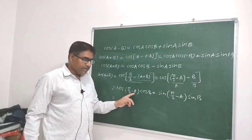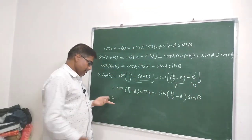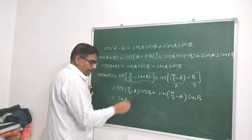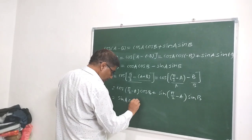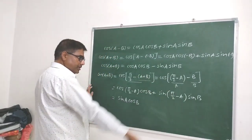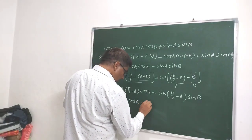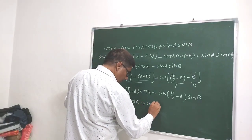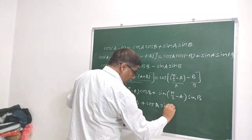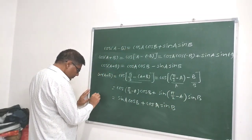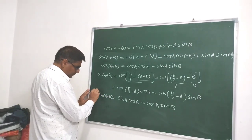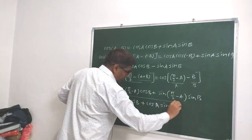cos(90° - θ) = sin θ, therefore cos(π/2 - A) = sin A. And sin(90° - θ) = cos θ, therefore sin(π/2 - A) = cos A. So this becomes sin A · cos B + cos A · sin B. This is the formula for sin(A+B). Very simple.